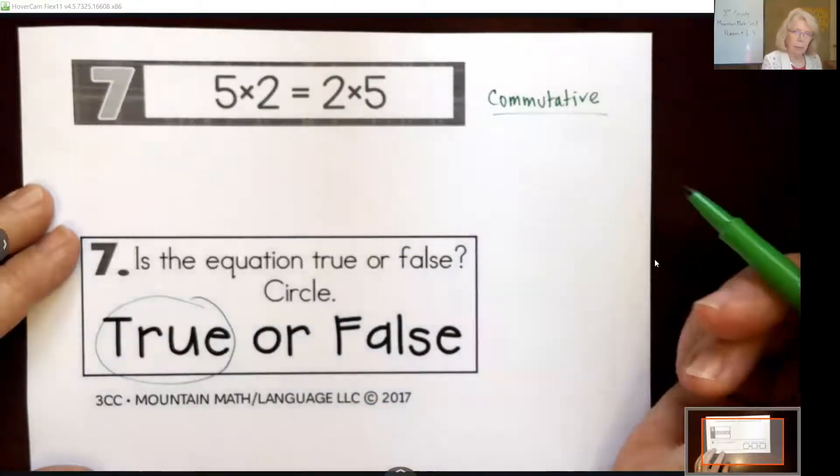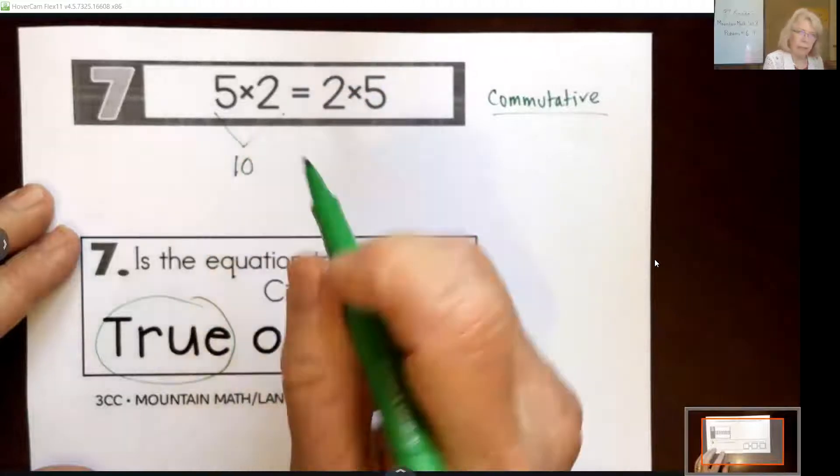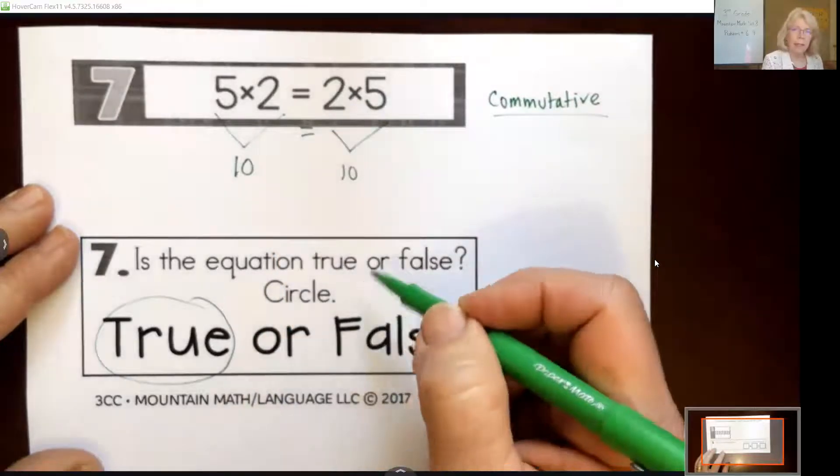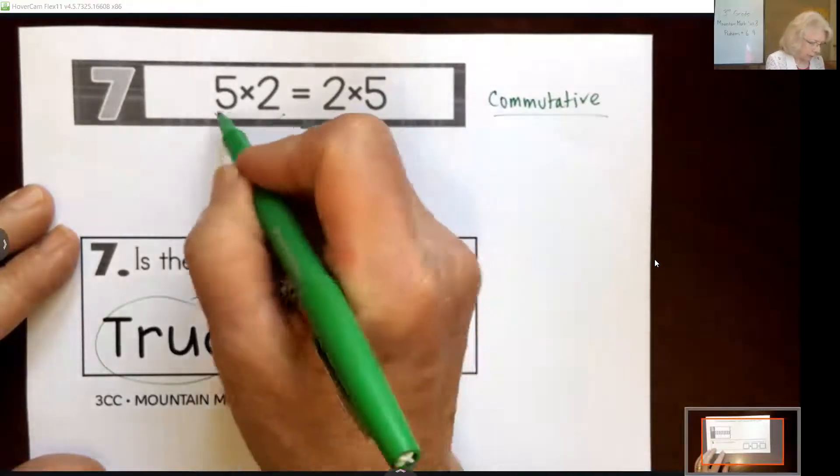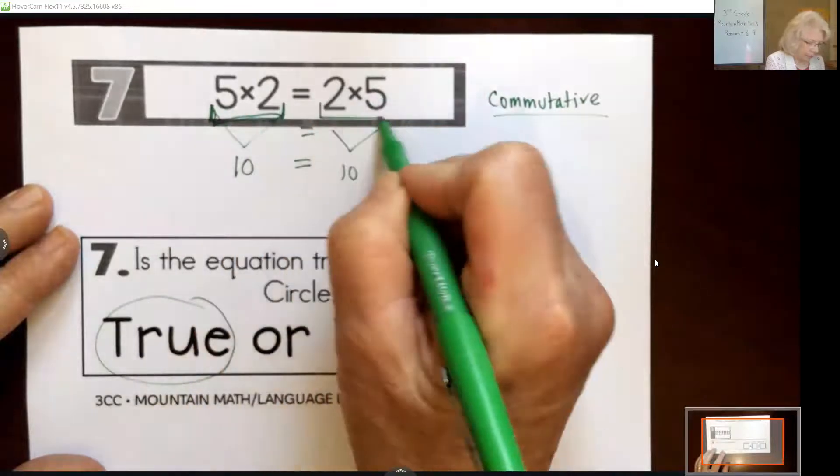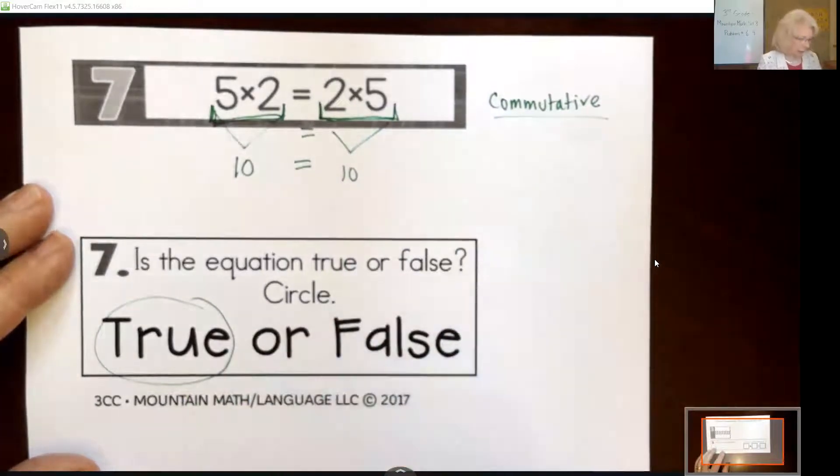If you didn't remember the commutative property, you could also just solve this. 5 times 2 is 10, and 2 times 5 is 10, and 10 is equal to 10. So in an equation, we want to know that what's on the left has the same value as what's on the right, and this would also get us to true.